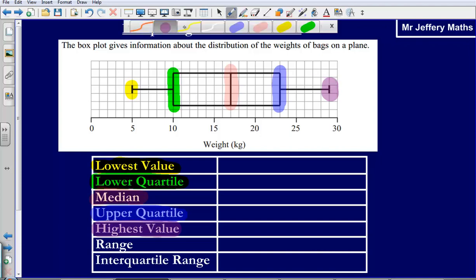Okay, so let's write down what each of these values are then. So for this box plot, what is our lowest value? Our lowest value is 5.